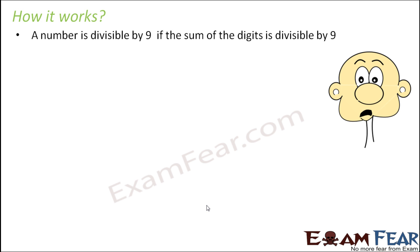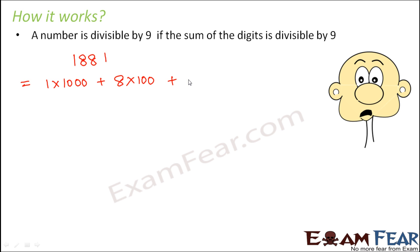So again, how does the divisibility rule for 9 work? We will prove it in a similar way as we did for the divisibility test for 3. Let's consider the number 1881 and expand it as: 1×1000 + 8×100 + 8×10 + 1×1.